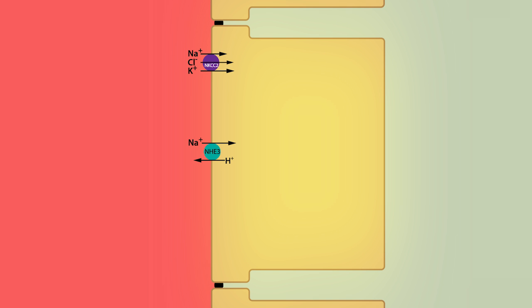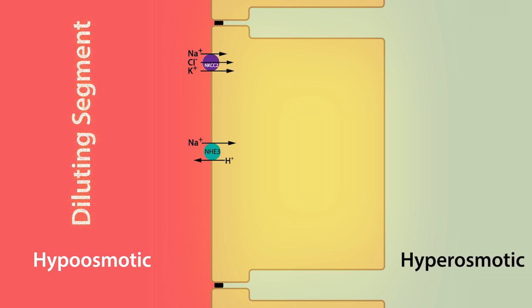In addition, sodium reabsorption along the thick ascending limb leaves the osmolality of the luminal fluid hypoosmotic relative to the interstitial and plasma osmolality. This is because water is not reabsorbed along this segment. This is why the thick ascending limb is often referred to as the diluting segment.